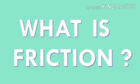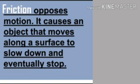What is friction or frictional force? Friction opposes motion. It causes an object that moves along a surface to slow down and eventually stop. Suppose, if we roll a ball along the ground, it moves for some time and then it stops. The reason is that there is a force acting in the opposite direction of the movement of the ball. So, the ball comes to a rest.